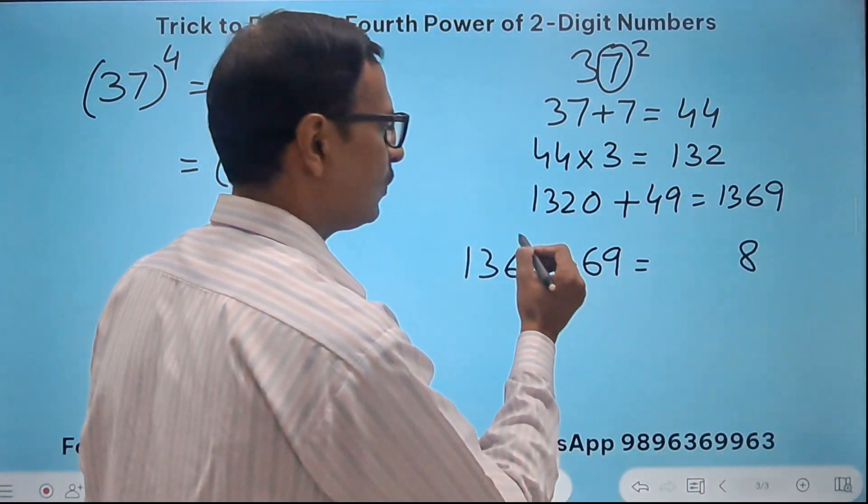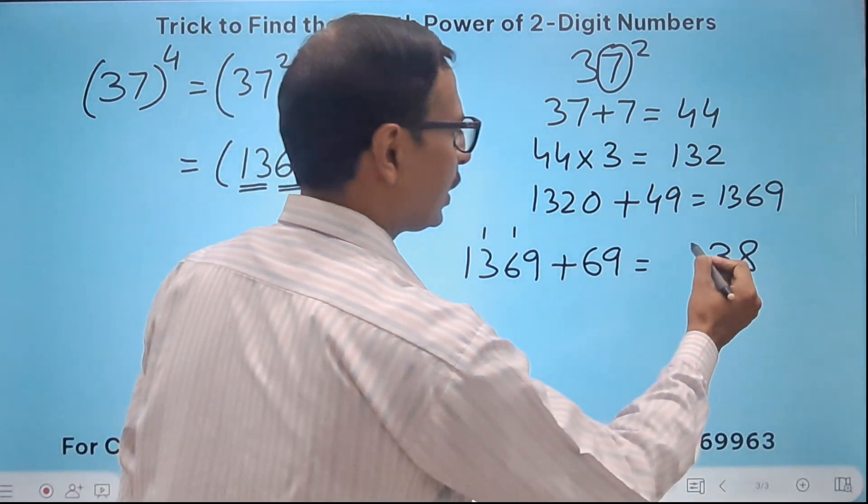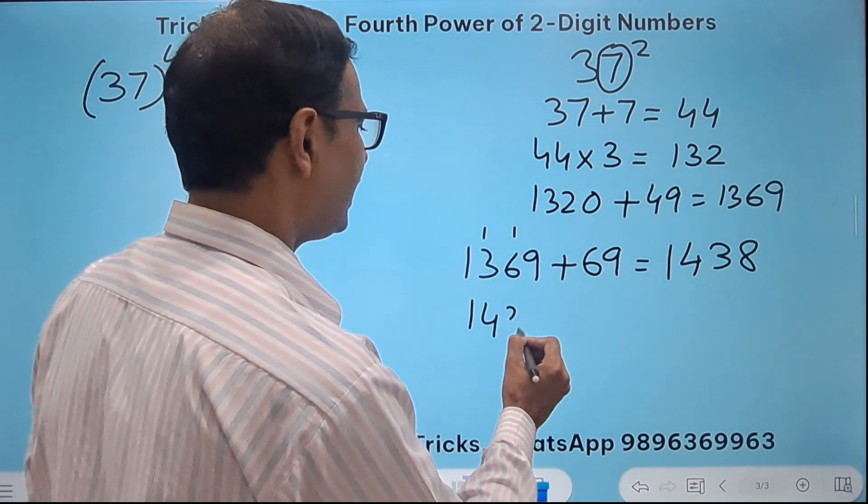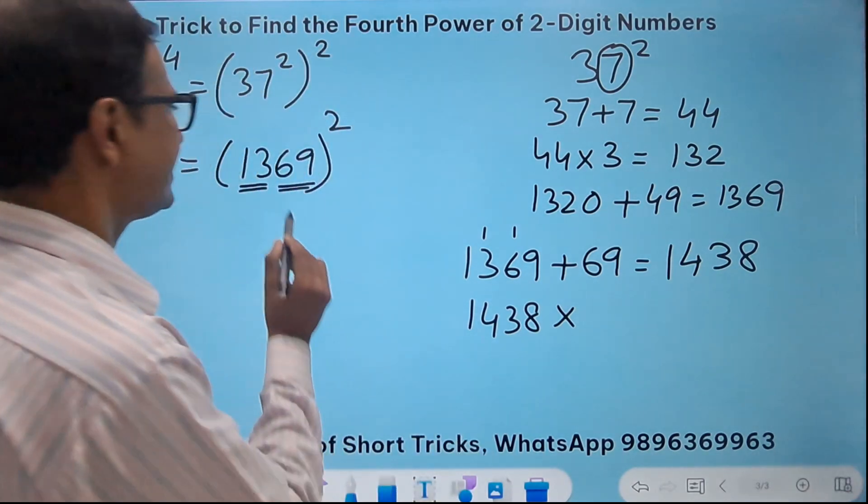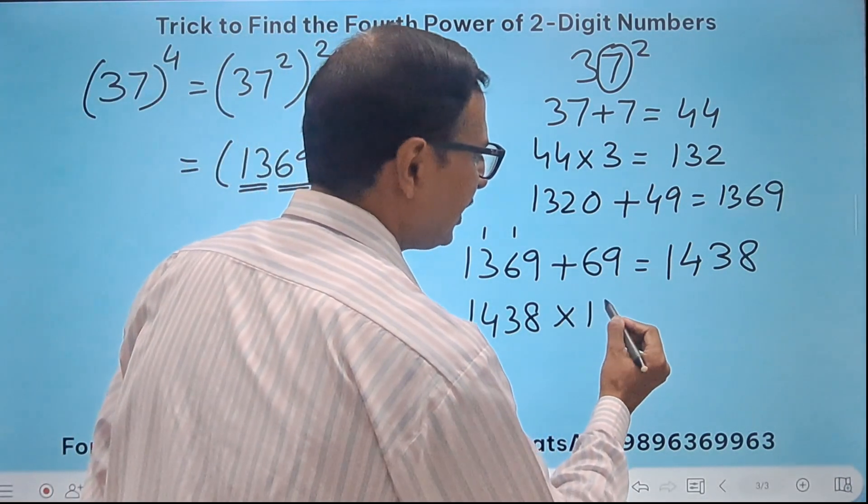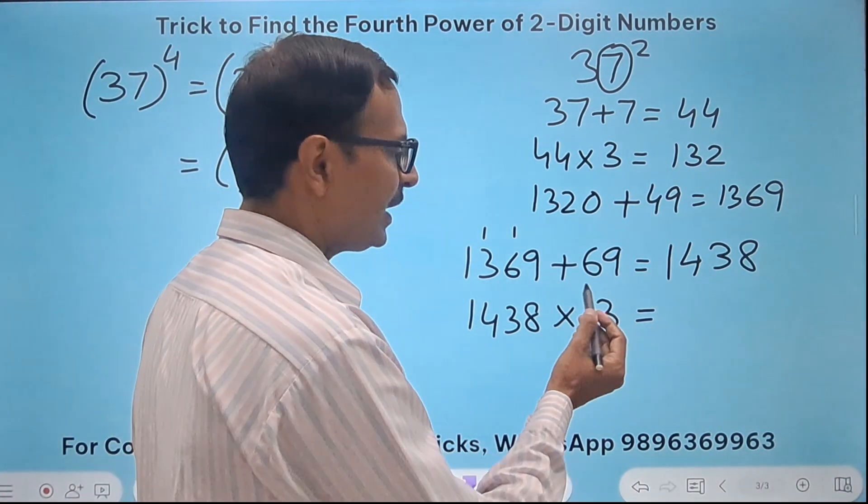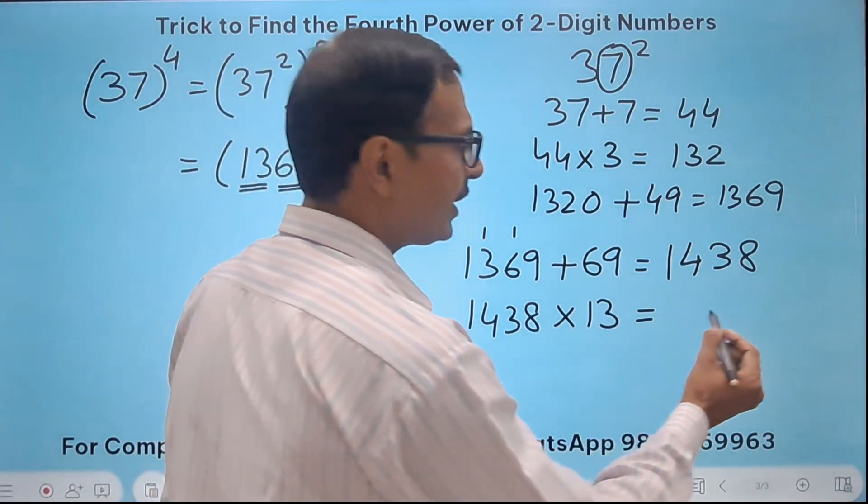So what will I do? 1369 plus this 69. What does it give me? 1438 and then 1438 times 13. So I need to know my 13 times table well.